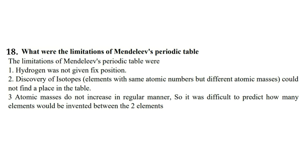Next question: what were the limitations of Mendeleev's periodic table? First, hydrogen was not given a fixed position. Second, the discovery of isotopes could not find a place in the table. Third, atomic masses do not increase in a regular manner, so it was difficult to predict how many elements would be discovered between two elements. These are the limitations of Mendeleev's periodic table.